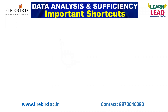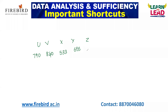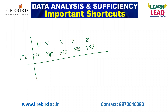In data interpretation, they will give you some values — for example, the number of employees in a company working in different departments U, V, X, Y, Z. Department U has 790 employees, department V has 840, department X has 533, department Y has 655, and department Z has 782. They may ask you the average number of employees working in that company in a given year.